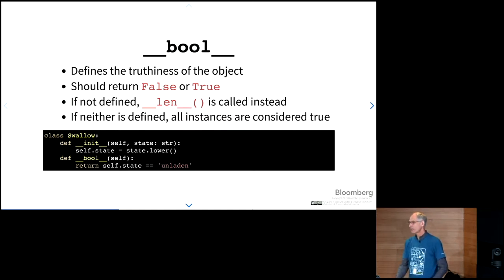One of the other things that you might want to think about is implementing Dunder bool. Dunder bool defines the truthiness of the object. Generally, this should return true or false. But if you don't implement Dunder bool, the Dunder len method is called. So for containers, this is why an empty list, an empty dictionary, an empty set return false, is because they call the Dunder len method for those classes. And the truthiness is if len returns zero, it's false. If it returns any other value, it's true. Now if you don't implement either of these methods, then all instances of your class will be considered true. And so here we have a class swallow, and we're keeping track of the state of this swallow. And we are only true if we have an unladen swallow.